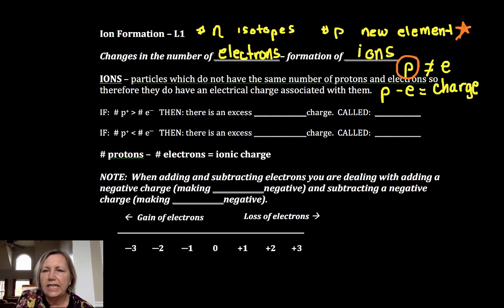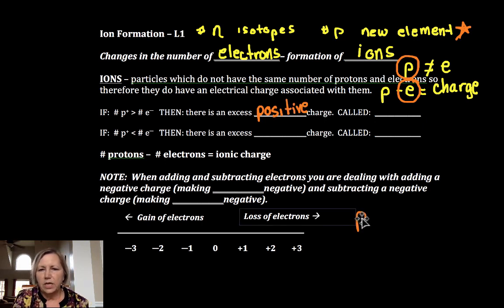You only make ions by changing the number of electrons present. So if we lose electrons we end up with more protons than electrons. There's an excess positive charge. Because protons minus electrons would be a positive number. And those are called cations.